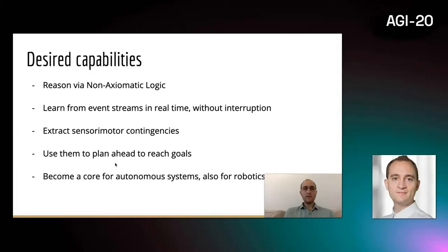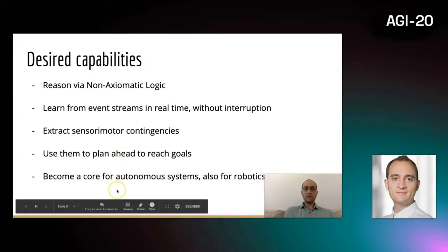The desired capabilities of this system include to reason via non-axiomatic logic, to be able to learn from event streams in real-time without interruption. Also, it should be able to extract sensorimotor contingencies and to use them to plan ahead to reach different outcomes. It should become a core for autonomous systems, including robotics.